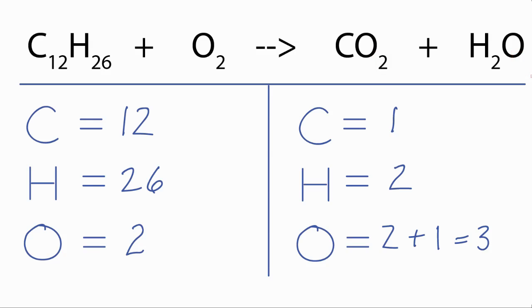Let's do the carbons and hydrogens first, leaving the oxygens to last. So I'll put a 12 in front of the carbon dioxide, because 12 times 1 equals 12, so the carbons are balanced.